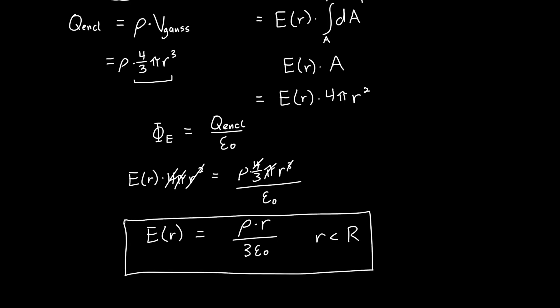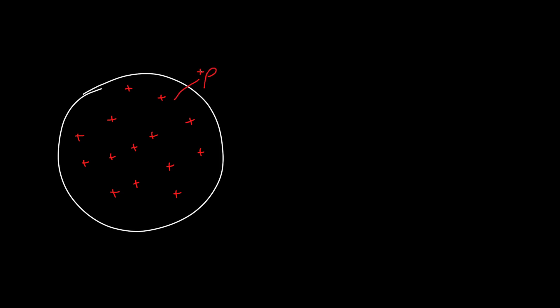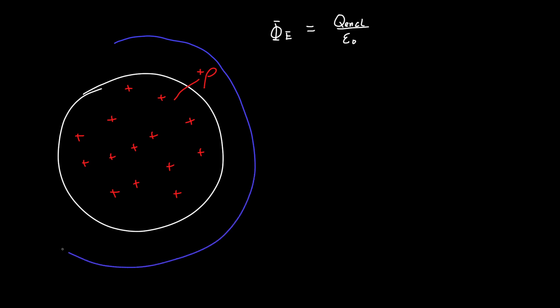Now let's find the electric field outside the sphere. We redraw our charged sphere with uniform charge density rho distributed throughout. We solve this the same way with Gauss's Law. The trick is to choose a Gaussian surface outside our sphere — a sphere of radius little r that is bigger than big R — which captures the electric flux outside.